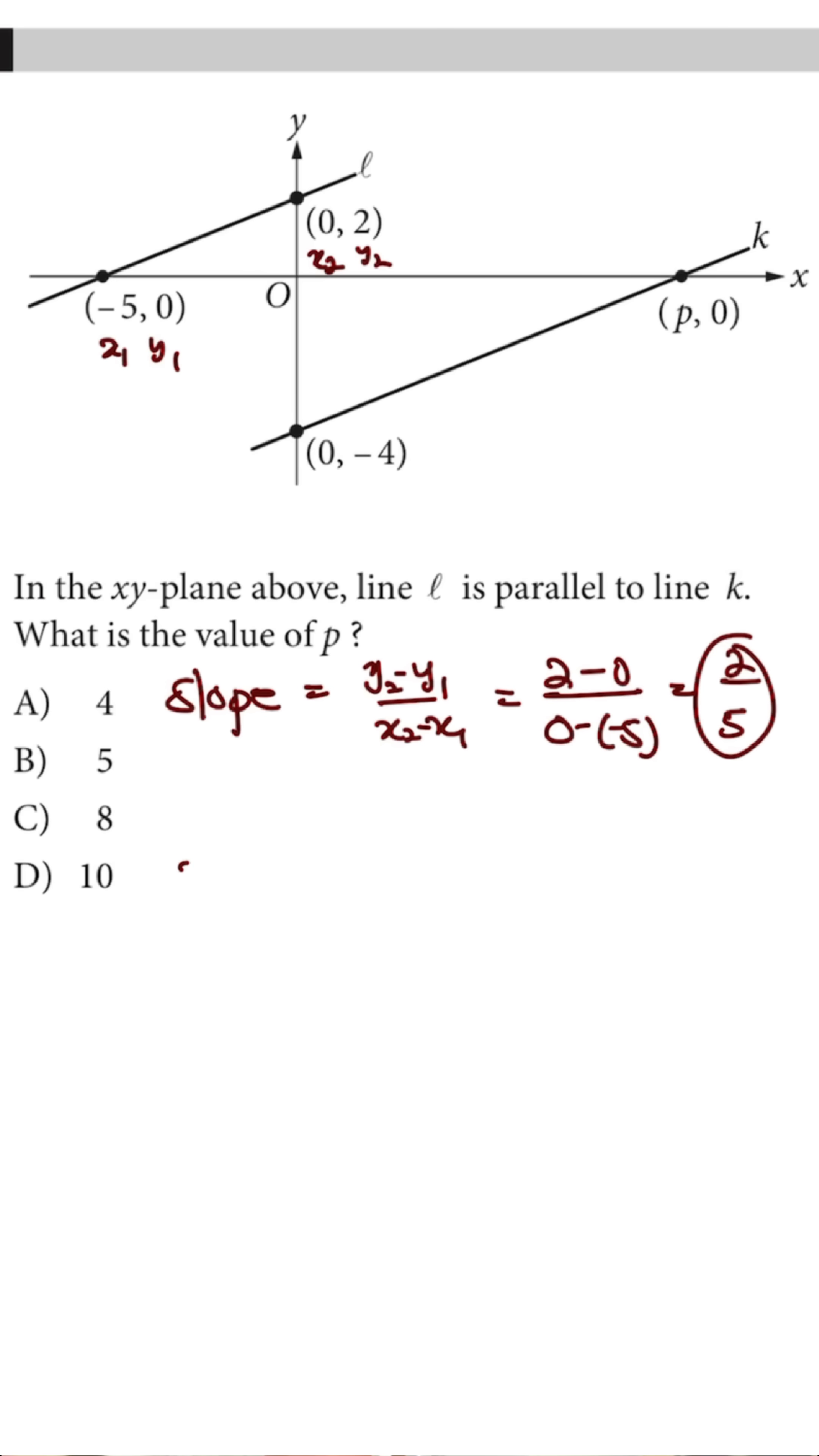So now, 2 over 5 will be equal to... So let's name this one X1, Y1, X2, Y2. So 2 over 5 equals 0 minus negative 4 divided by P minus 0.